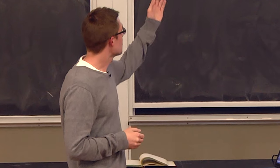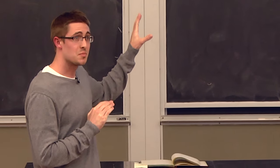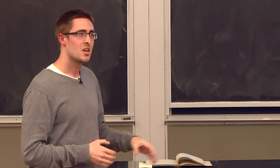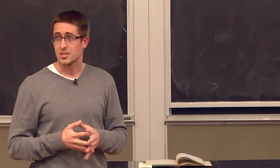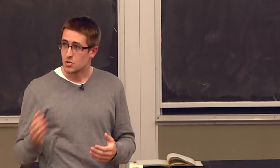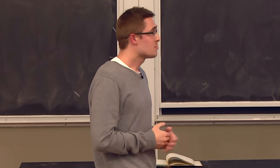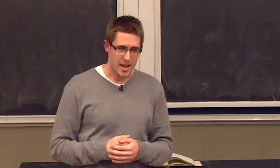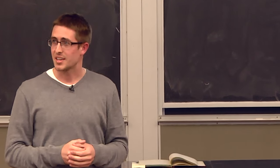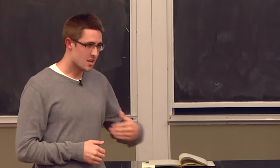You need to place your research into a broader context that people can understand. In my case, the biggest idea was that the universe has a bunch of galaxies. From there, I thought of smaller, more focused ideas to lead the audience from the big picture to what you do in your dissertation — galaxies change over time, one way is through an active phase, active galaxies have black holes, black holes make winds, and then the question: do black hole winds make galaxies change? The two most important things are establishing a big picture context and having a punchline for what you're actually doing in your dissertation.